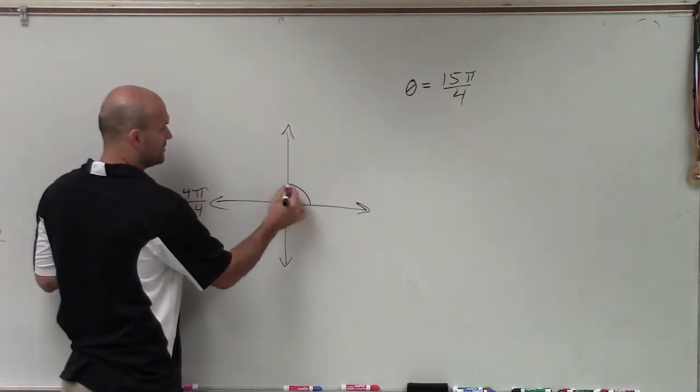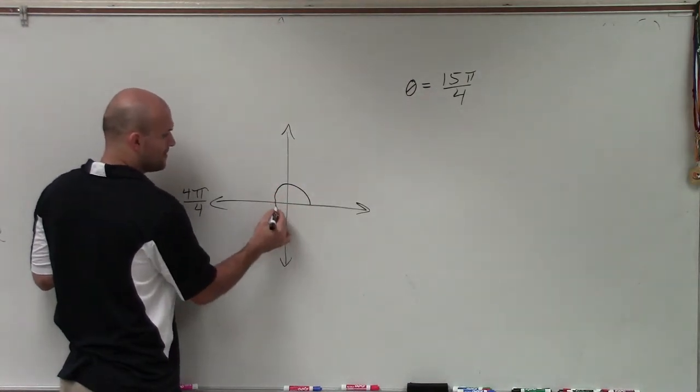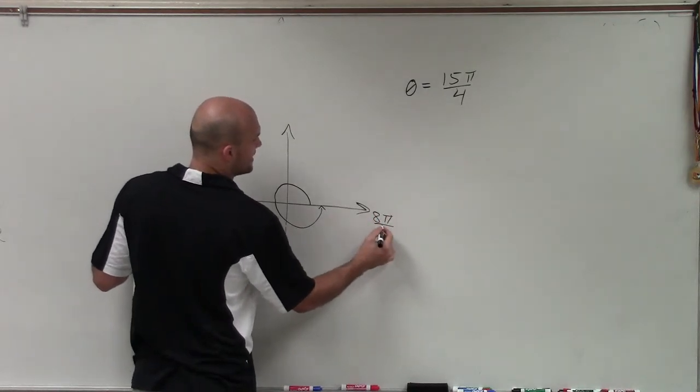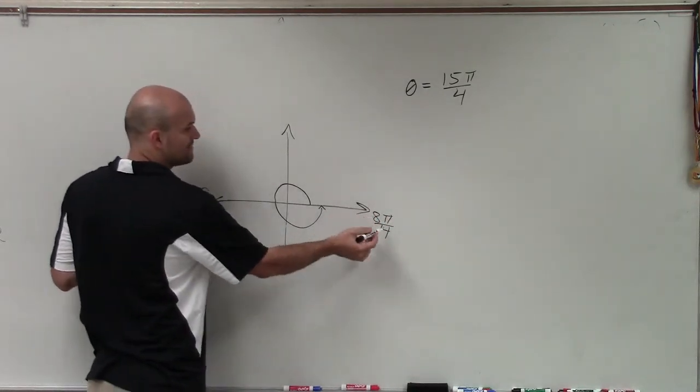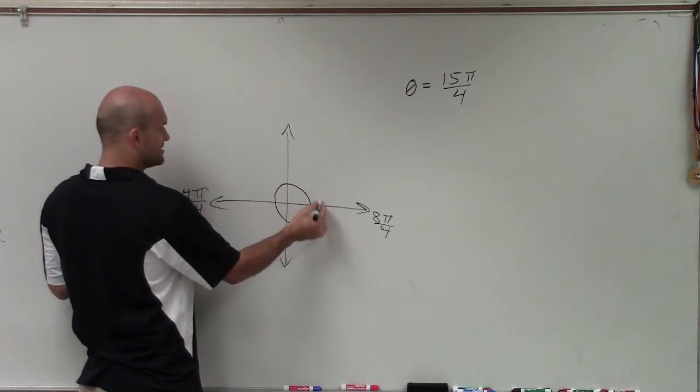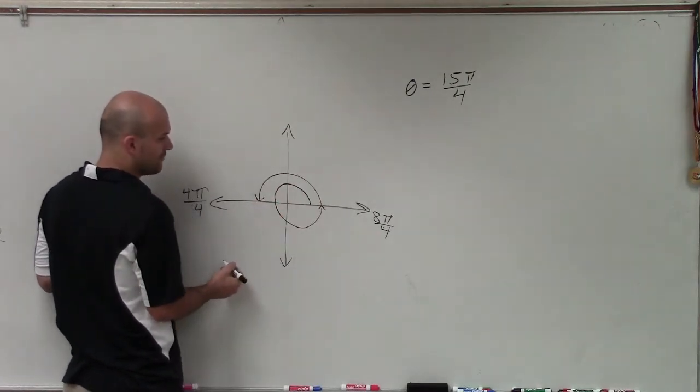So if I have my angle, here would be 4 pi over 4. Then if I go a whole revolution, that's going to be 2 pi, which I can represent as 8 pi over 4. Because remember, 8 divided by 4 is 2 pi. So then if I continue this process, I'll have 12 pi over 4.